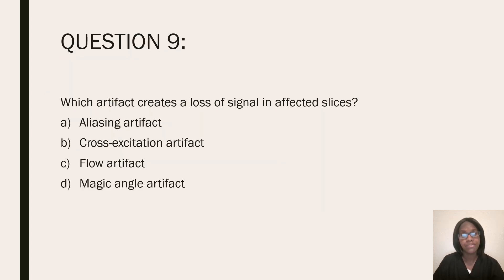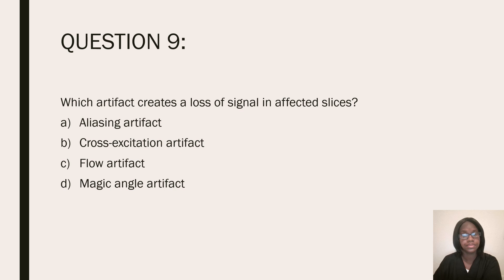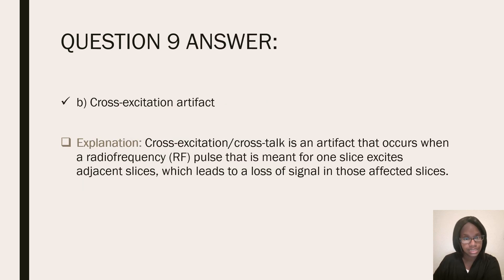Question nine: which artifact creates a loss of signal in affected slices? Aliasing artifact, cross excitation artifact, flow artifact, or magic angle artifact? Cross excitation artifact — also known as crosstalk. This is an artifact that occurs when a radio frequency or RF pulse that is meant for one slice excites adjacent slices, which can lead to a loss of signal in those affected slices.